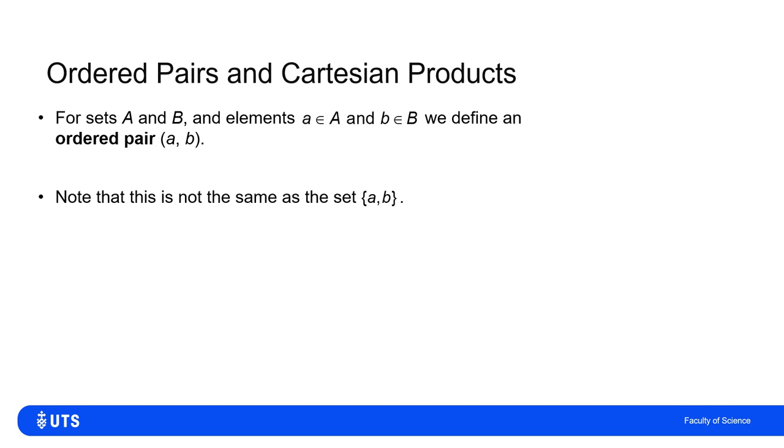Notice the different bracket notation. The curly brackets are denoting a set, so the set containing a and b only doesn't care about order. A set containing elements a and b is the same as a set containing elements b and a. For an ordered pair, as the name suggests, that's not true. The ordering matters for an ordered pair.